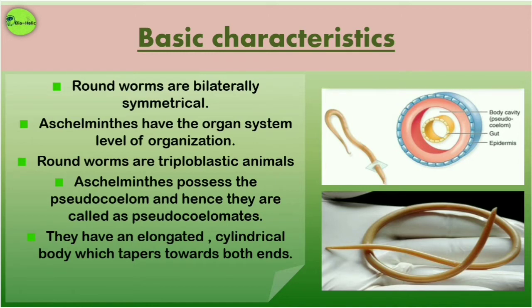The organs are associated to form distinct systems concerned with specific physiological functions like digestion, respiration, circulation, excretion, and so on. So they have the organ system level of organization. The roundworms are triploblastic animals.